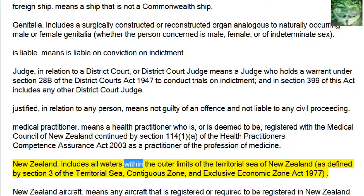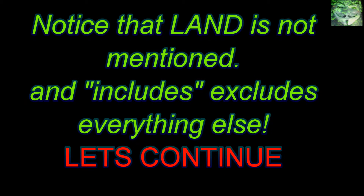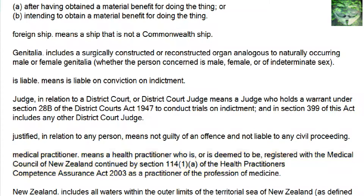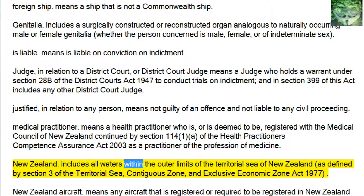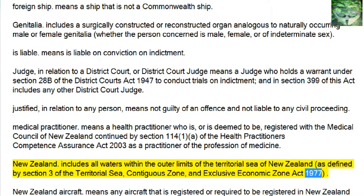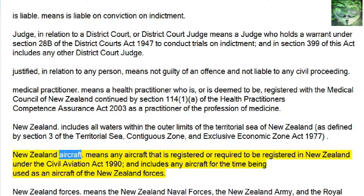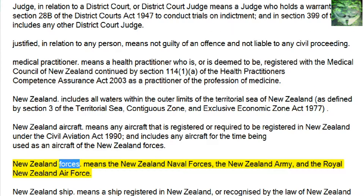New Zealand includes all waters within the outer limits of the Territorial Sea of New Zealand, as defined by Section 3 of the Territorial Sea, Contiguous Zone, and Exclusive Economic Zone Act 1977. New Zealand Aircraft means any aircraft that is registered or required to be registered in New Zealand under the Civil Aviation Act 1990, and includes any aircraft for the time being used as an aircraft of the New Zealand Forces. New Zealand Forces means the New Zealand Naval Forces, the New Zealand Army, and the Royal New Zealand Air Force.